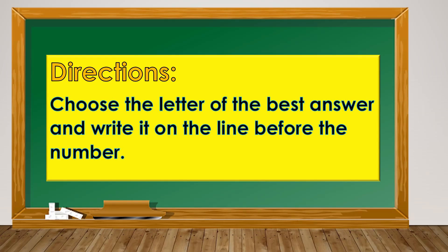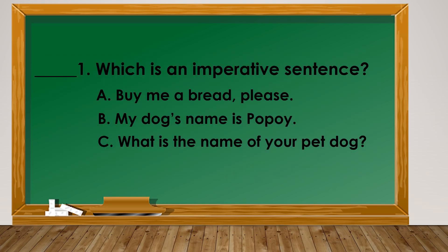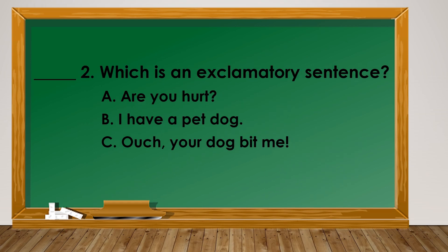Directions: Choose the letter of the best answer and write it on the line before the number. Number 1: Which is an imperative sentence? A. Buy me a bread, please. B. My dog's name is Popoy. C. What is the name of your pet dog? Number 2: Which is an exclamatory sentence? A. Are you hurt? B. I have a pet dog. C. Ouch! Your dog bit me.